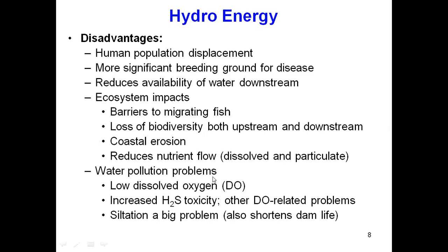Water pollution problems also arise from reduced water speed due to the dam, leading to low dissolved oxygen, increased hydrogen sulfide toxicity, and other dissolved-oxygen-related issues. Siltation is also a major problem: water flowing in the river carries dust, mud, and ash, which accumulates in the dam, reducing its capacity and shortening the dam's life.